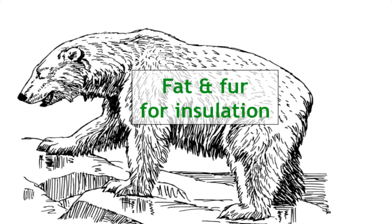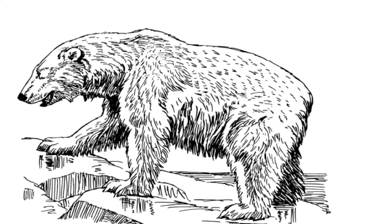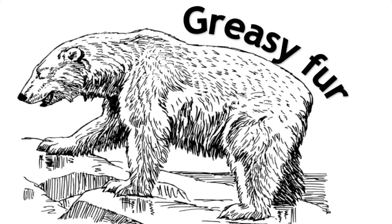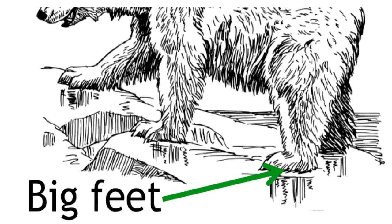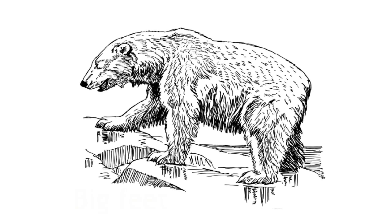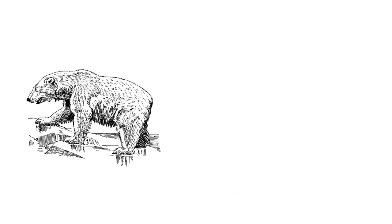They have thick layers of fat and fur to insulate them from the cold. Their fur is greasy so it dries quickly after swimming. They have big feet to spread their weight on the ice and to increase grip, and they also have a small surface area to volume ratio to minimize heat loss.